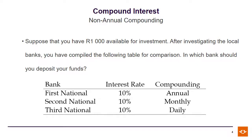The First National offers an interest rate of 10% and its compounding period is annual. The Second National Bank offers an interest rate of 10%, but its compounding period is monthly. And the Third National Bank offers an interest rate of 10% as well, but its compounding period is daily.